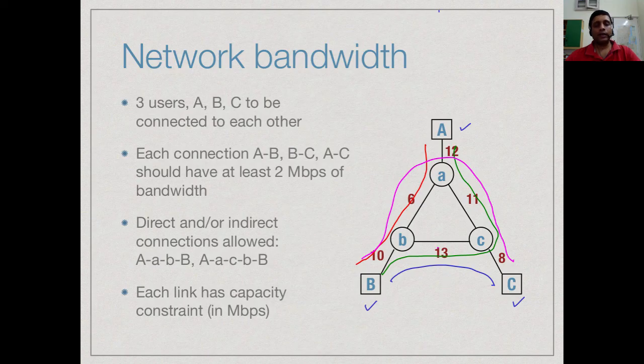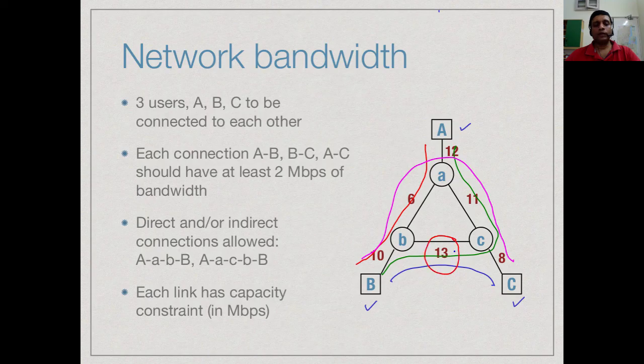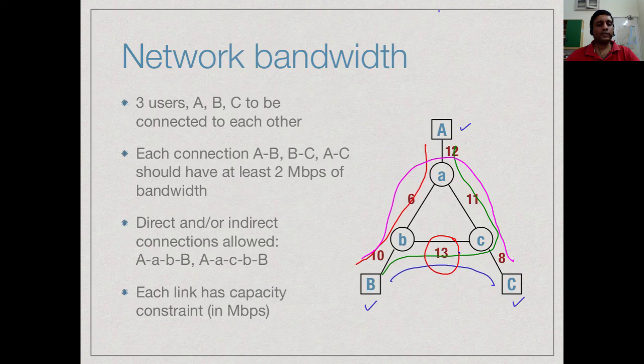Now the constraint that we have is that these links have a capacity. If I look at for example, the link between B and C, it can only transmit 13 megabits per second total across all the different connections that it is a part of.